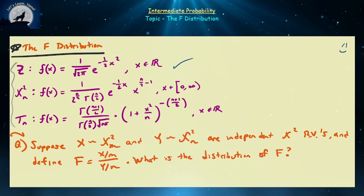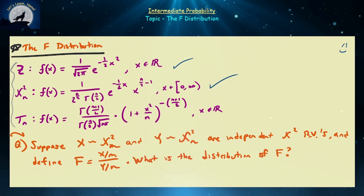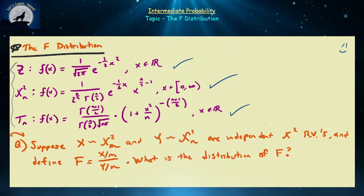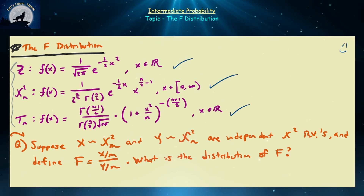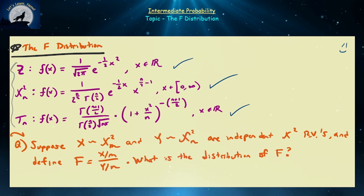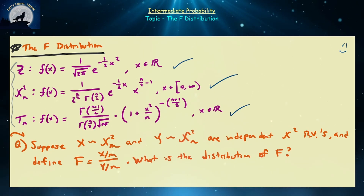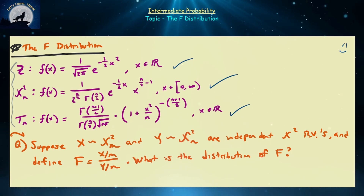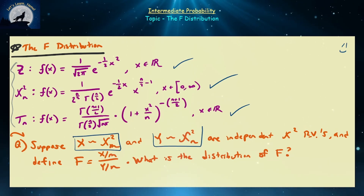Up to this point we have the Z distribution, which is a baseline distribution for a lot of parametric testing methods, statistical inference, machine learning, and data science. We also have the chi-squared distribution, which is very useful for analyzing variances. Last time we derived the T distribution, commonly applied when you don't know the standard deviation of the population.